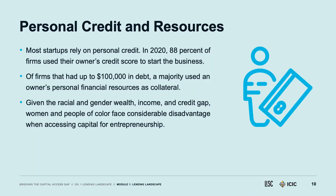The reason this wealth inequality matters for capital access is that most business owners start and grow their businesses for the first several years based on personal credit and resources. In 2020, 88% of firms used their owner's credit score to start the business, and a majority used personal financial resources as collateral. Given the racial and gender wealth, income, and credit gap, women and people of color face considerable disadvantage. If you add gender and race together, the wealth gap becomes even more extreme.